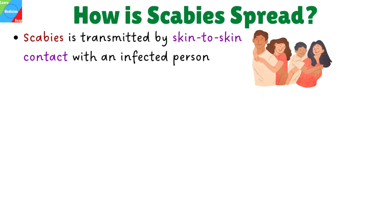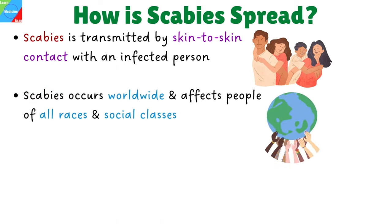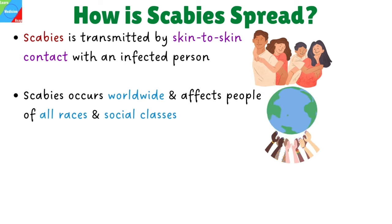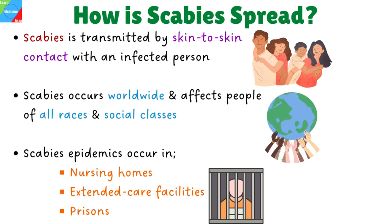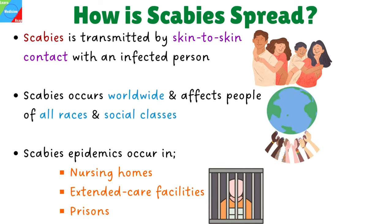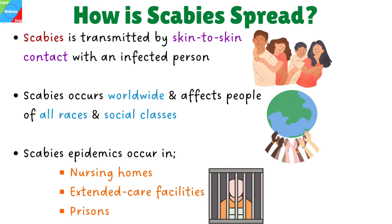How is scabies spread? It is transmitted readily, often throughout an entire household, by skin-to-skin contact with an infected person, especially among people who live close together. It occurs worldwide and affects people of all races and social classes. Scabies epidemics frequently occur in settings like nursing homes, extended care facilities, and prisons.